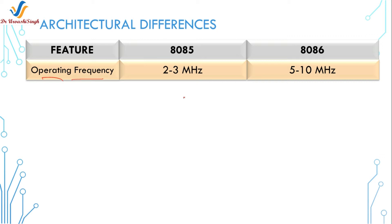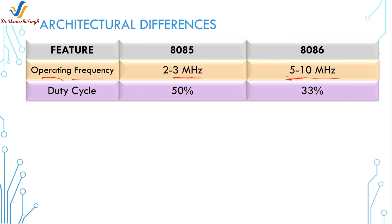The next feature is operating frequency — the frequency at which the microprocessor operates. In the 8085 it is a maximum of 3 MHz. In the 8086 it is 5 to 10 MHz, with this range existing because there are 3 versions of the 8086. Then the duty cycle: the 8085 has a 50% duty cycle and the 8086 has a 33% duty cycle.